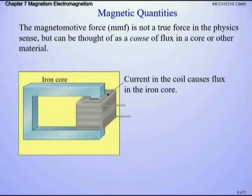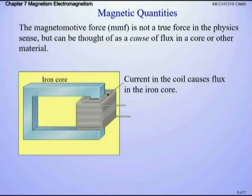You might have made an electromagnet in elementary school, connecting a battery to a wire wrapped around something. The magnetomotive force is not a true force in the physics sense, but it creates the flux field. This is important when we get into transformers — this is how we transmit electricity across a transformer. The wires don't physically touch; we use a magnetic field to transform voltage.